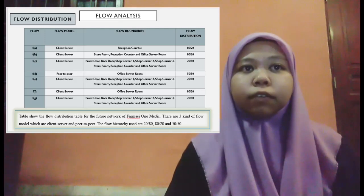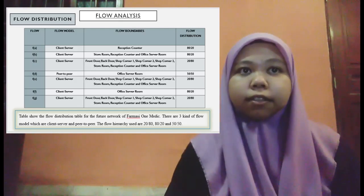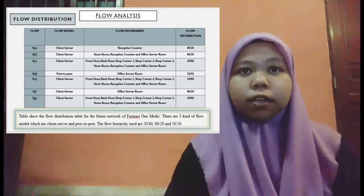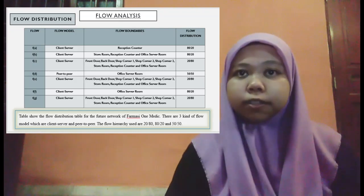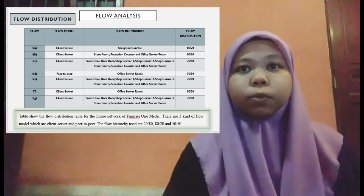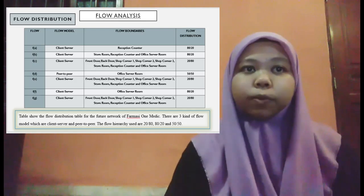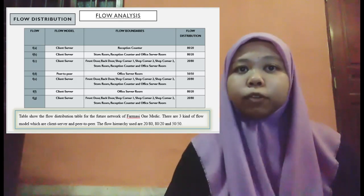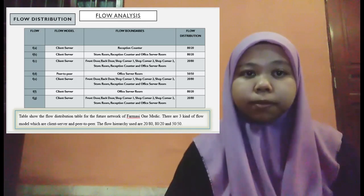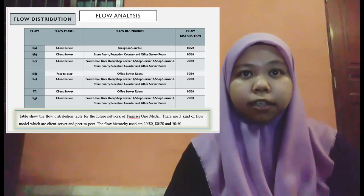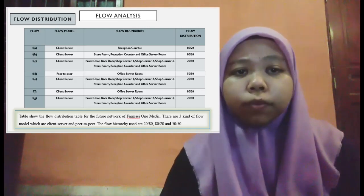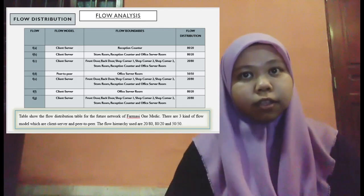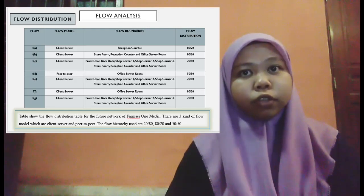For flow A, the model is client-server with flow boundary at the reception counter, so the flow distribution is 80/20. For flow B, also client-server, the flow boundary is storeroom, reception counter, and office server room, also with 80/20 flow distribution.